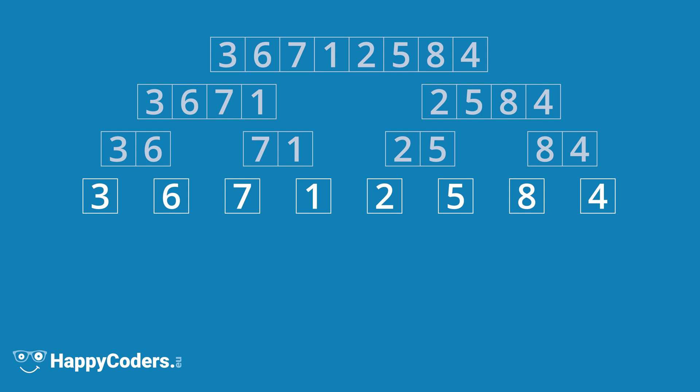Now we merge each two partial lists into one. We begin with the three and the six. We take the smallest element from the beginning of the two sub-lists. That is first the three, then the six. With the seven and the one, we take the one first, then the seven. So here, the order of the elements changes. The two and five remain unchanged again. And for the eight and four, the order changes again.